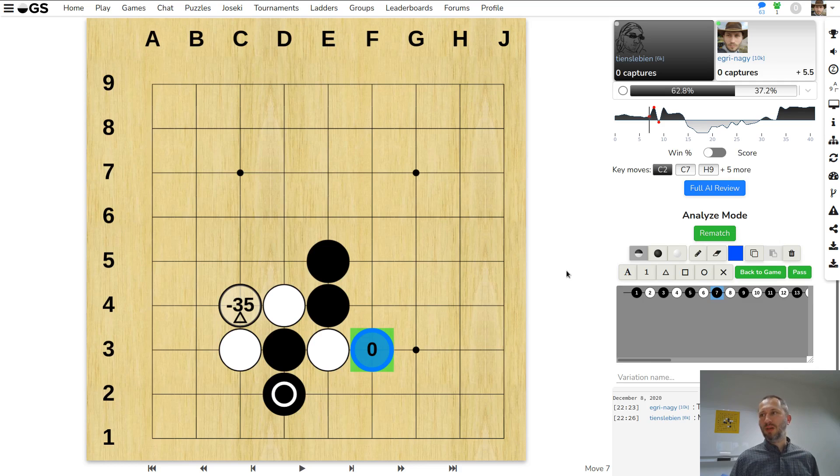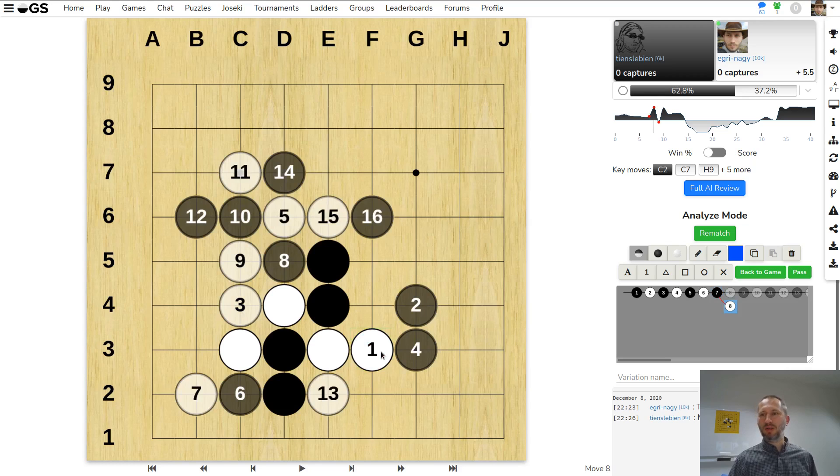Then you will see this annotation on the board. The blue one means that's the right move, that's what the AI thinks is the best possible move. If you click on it, you get a variation, so the computer will tell you this is probably the best way to proceed from here.